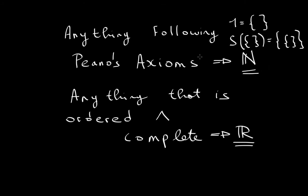So anything following Peano's axioms is really the natural numbers. Anything that is ordered and complete is the real number system. So it follows the nine axioms of a field, the three axioms of ordered fields, and the one axiom of completeness.